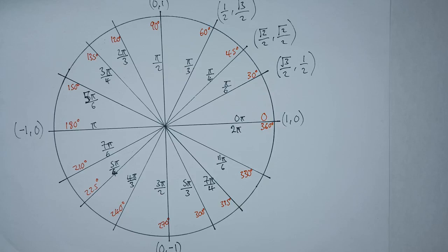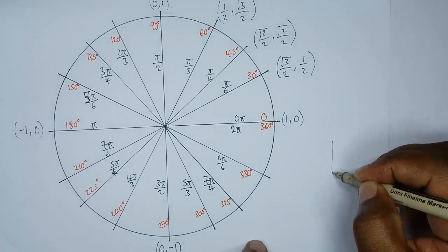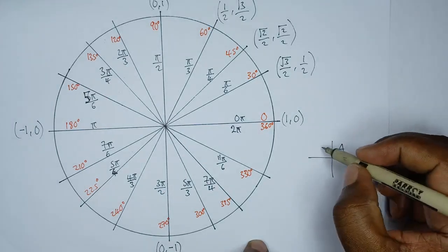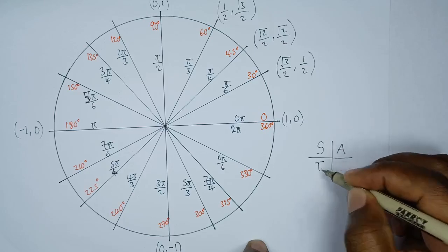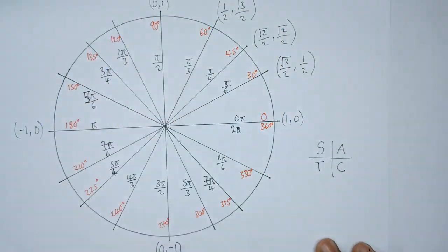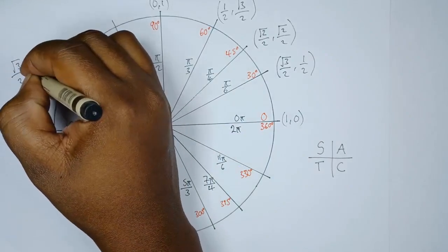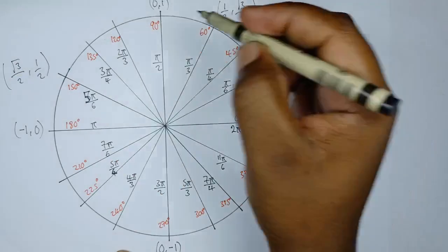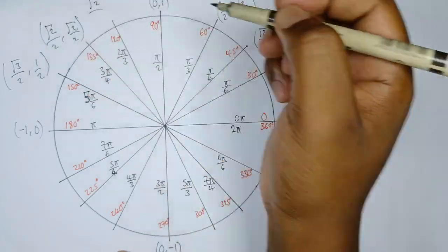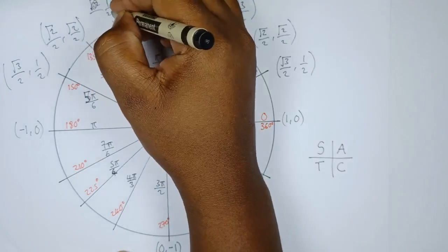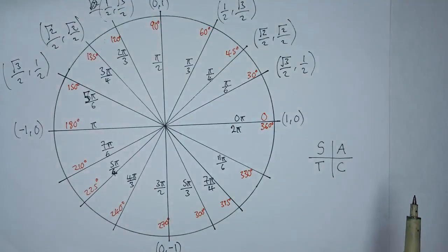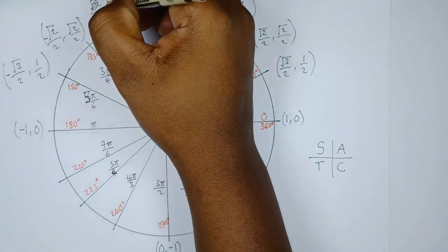Now we do the same in the second quadrant. In the second quadrant, only sin is positive — cos is negative. We have the same coordinate values as the first quadrant but with cos negated. So the coordinates going through the second quadrant are (−root 3 over 2, 1/2), (−root 2 over 2, root 2 over 2), and (−1/2, root 3 over 2).